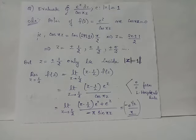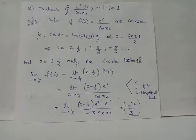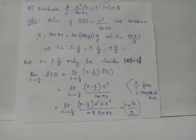The poles of f(z) = e^z / cos(πz) are obtained by equating the denominator cos(πz) to 0. We know that cos of an odd multiple of π/2 equals 0, therefore cos(πz) can be equated to cos of an odd multiple of π/2.